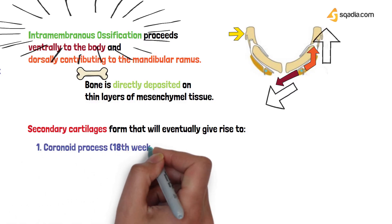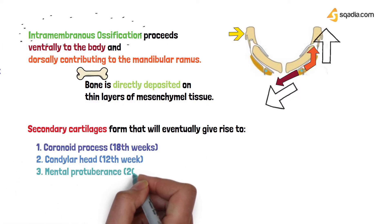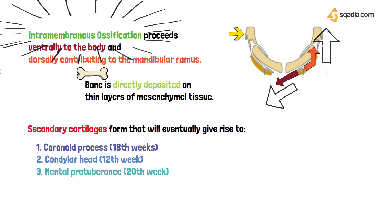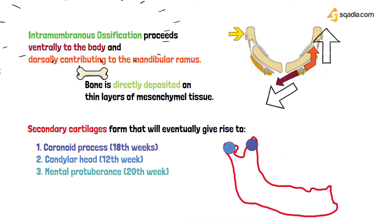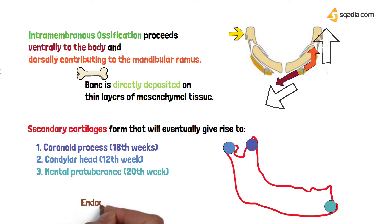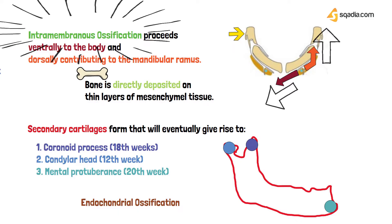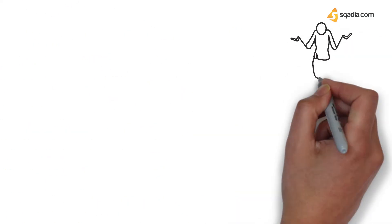Secondary cartilages appear at different times during intrauterine life. The coronoid process arises at around 18 weeks, the condylar head at around 12 weeks, and the mental protuberance around the 20th week. These secondary cartilages ossify by endochondral ossification.